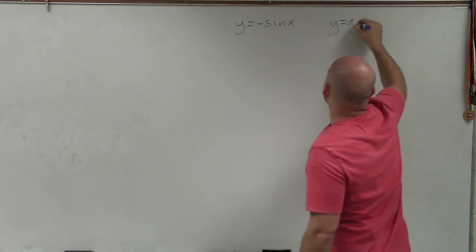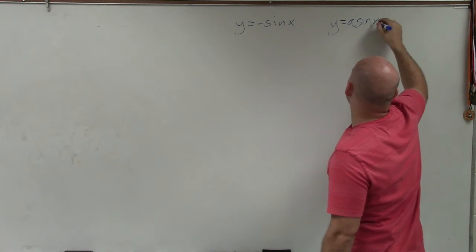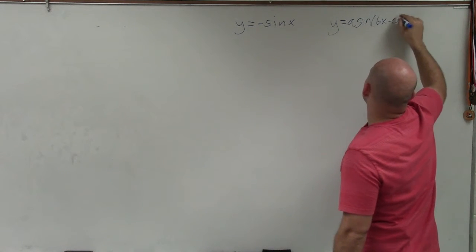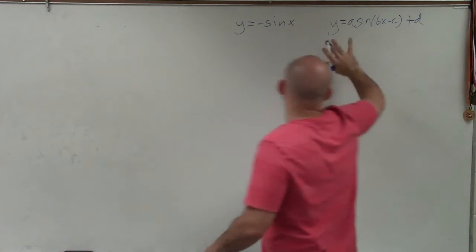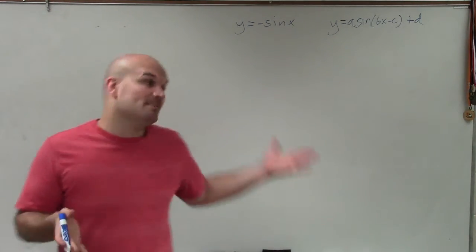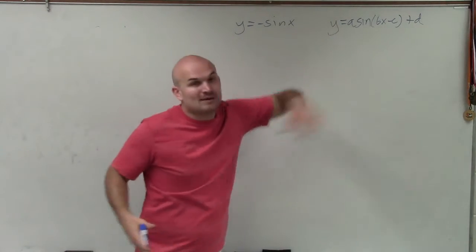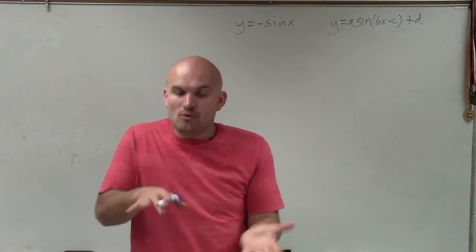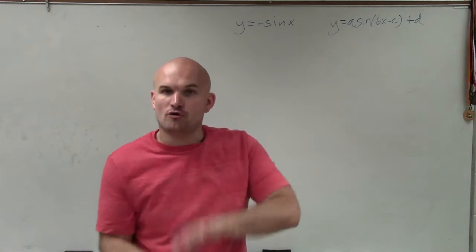So y equals a times sine of bx minus c plus d. You can see there's no b, c, or d, or a other than 1. But we can see that a is negative. So whenever a is negative, all we're simply doing is reflecting over the x-axis.